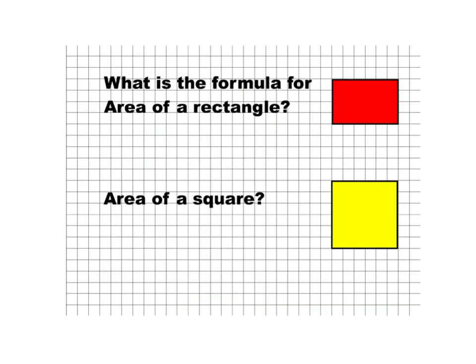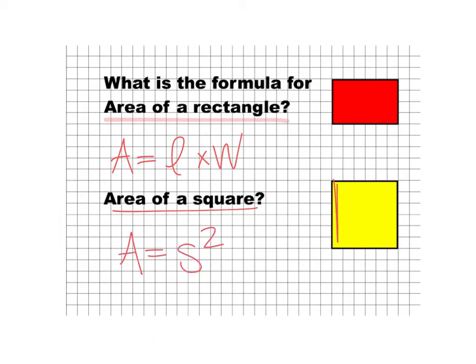Now let's have a refresher on the formula for area of a rectangle — that's going to be length times width. And then the area of a square is going to be side squared: you take your sides because they're the same and you square them.